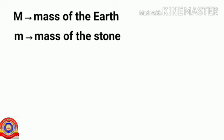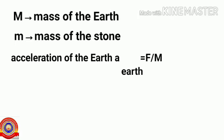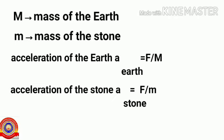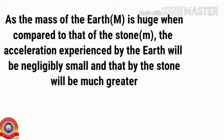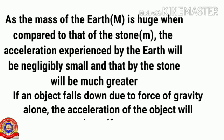As there is mutual attraction between them, they experience the same force. Therefore, acceleration of the earth = F/M and acceleration of the stone = F/m. Since the mass of the earth (M) is huge compared to that of the stone (m), the acceleration experienced by the earth will be negligibly small, while that of the stone will be much greater.